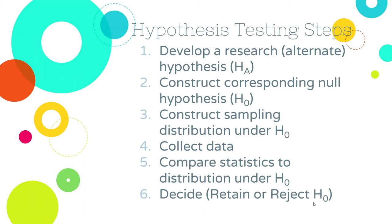This can sound kind of backwards. Rejecting the null means getting rid of the idea that there is no difference. Retaining means keeping the idea that there is no difference. So if I hypothesize that there's an effect and I find an effect, then I reject the null — I got rid of the idea there was no difference because the evidence indicates there likely is a difference. In place of 'reject the null,' we often say the effect was statistically significant, meaning what we observed is unlikely to happen by chance assuming the null is true. In place of 'retain,' we say the effect was not statistically significant — we can't conclude from our data that the statistic we obtained does not belong to the null distribution.